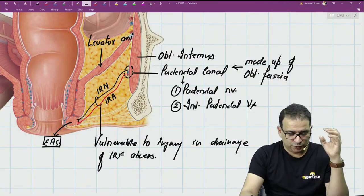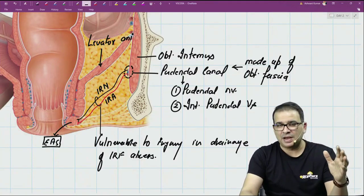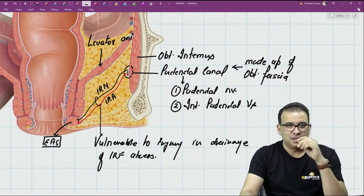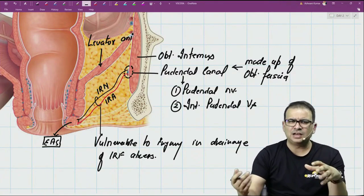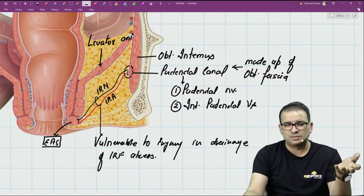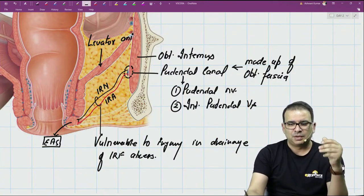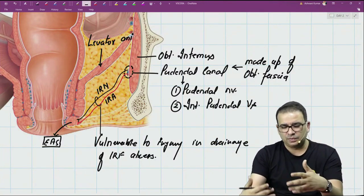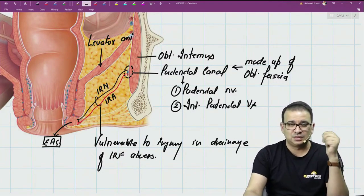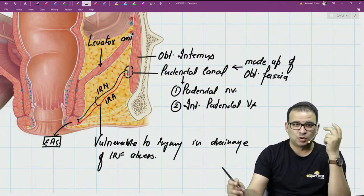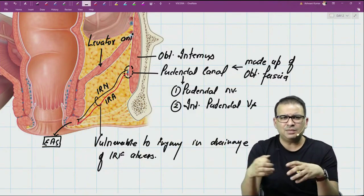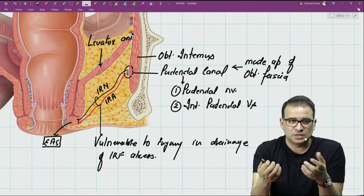These are the key things you must know about the perineum — the structural orientation and arrangement, especially in the ischio-rectal fossa. Identification of the levator ani has been asked twice in exams, and it is quite simple to identify the pelvic diaphragm. In upcoming years, we can expect more image-based questions on inferior rectal nerves and vessels, in addition to the theoretical questions that have already been asked.